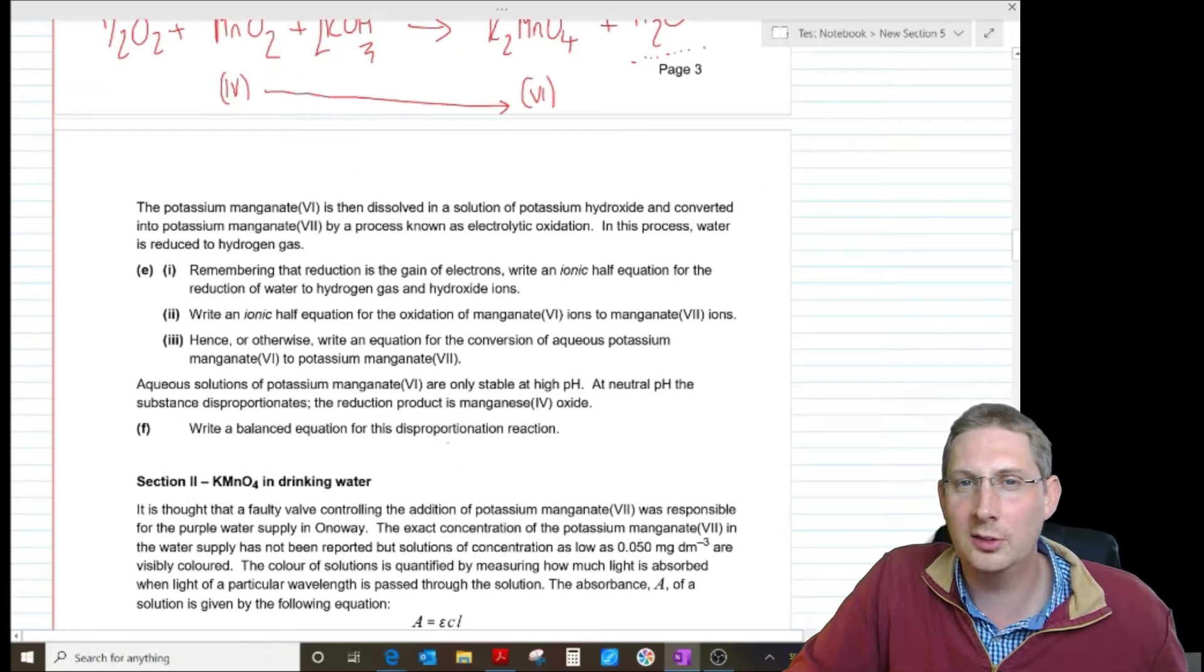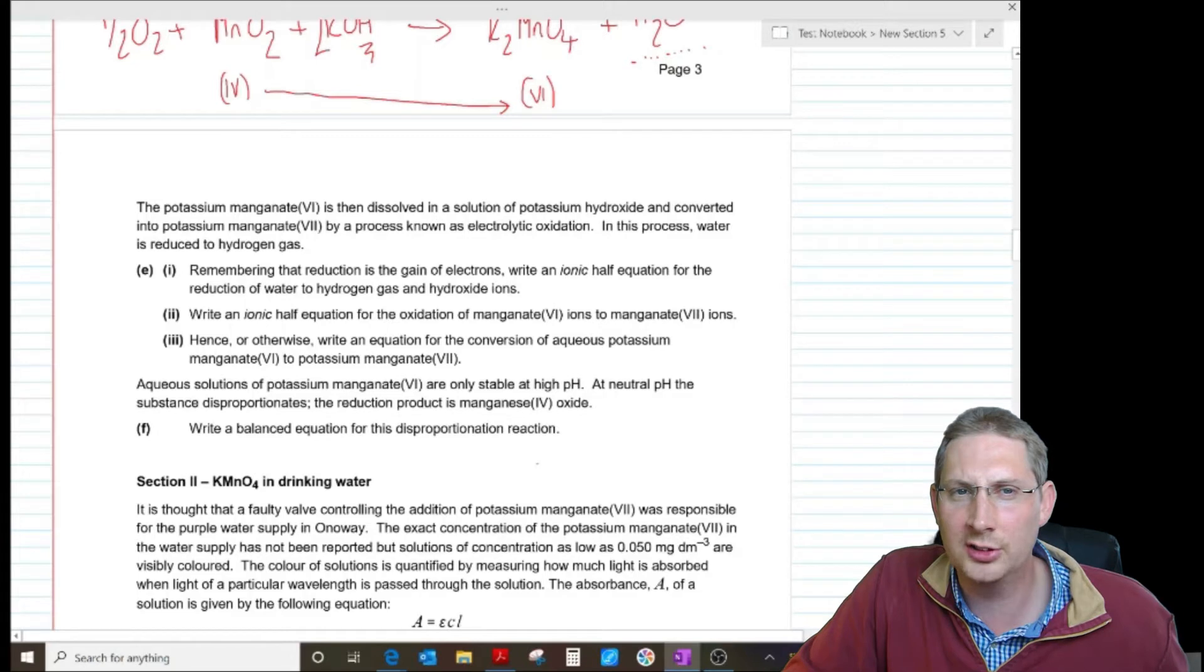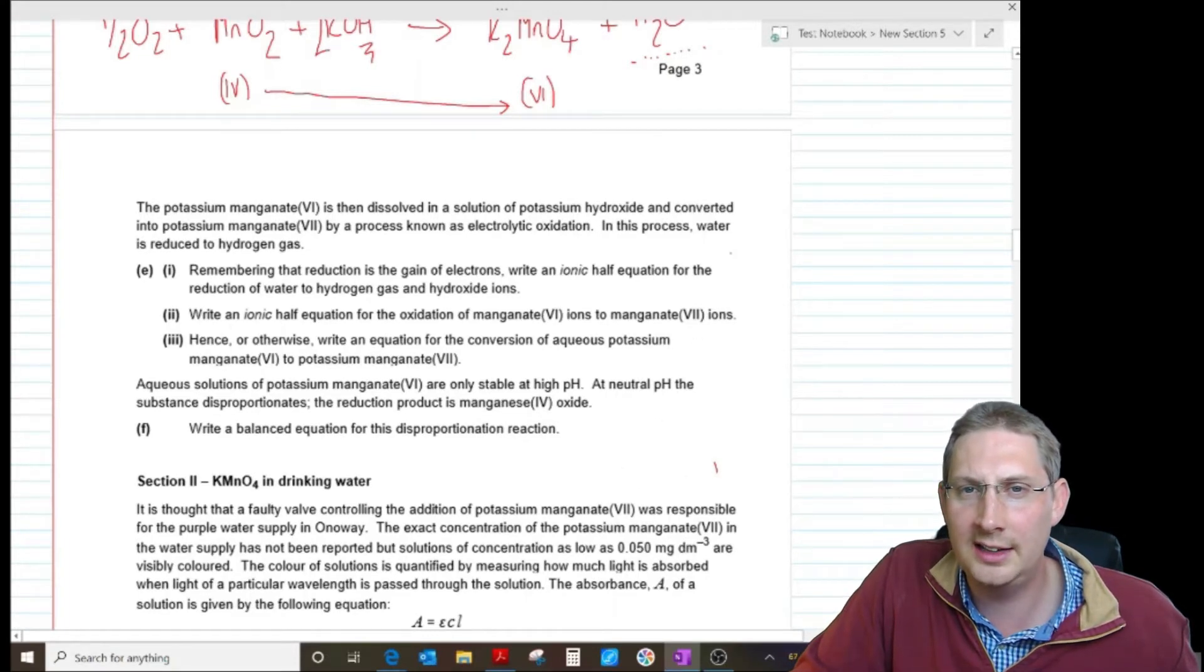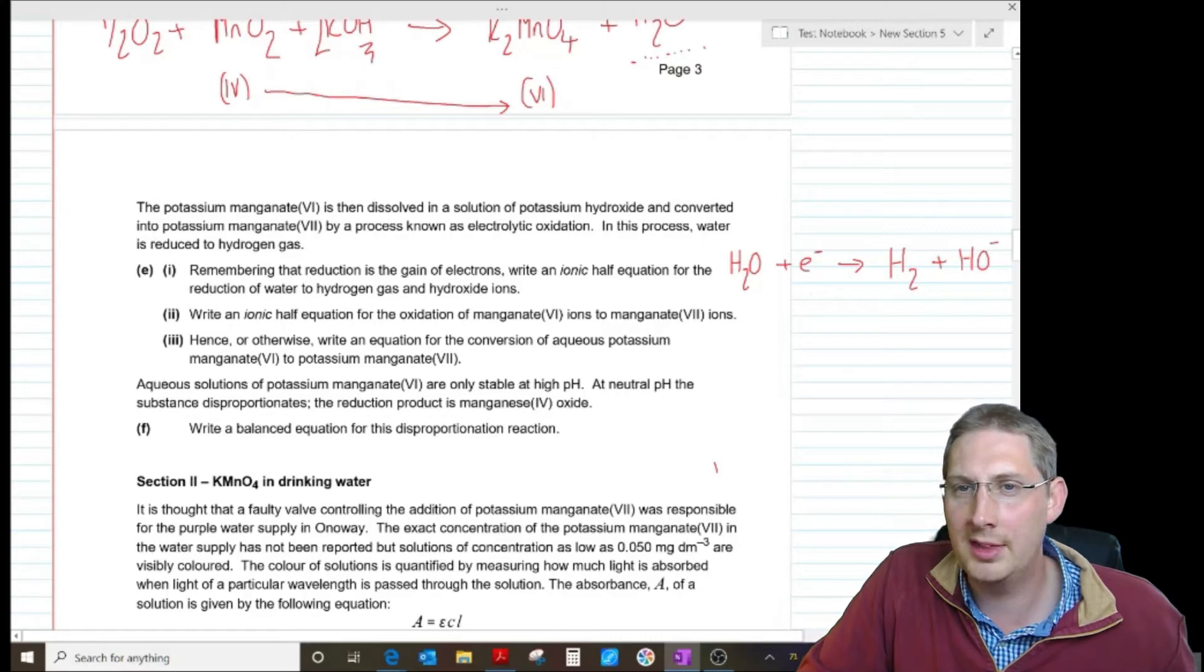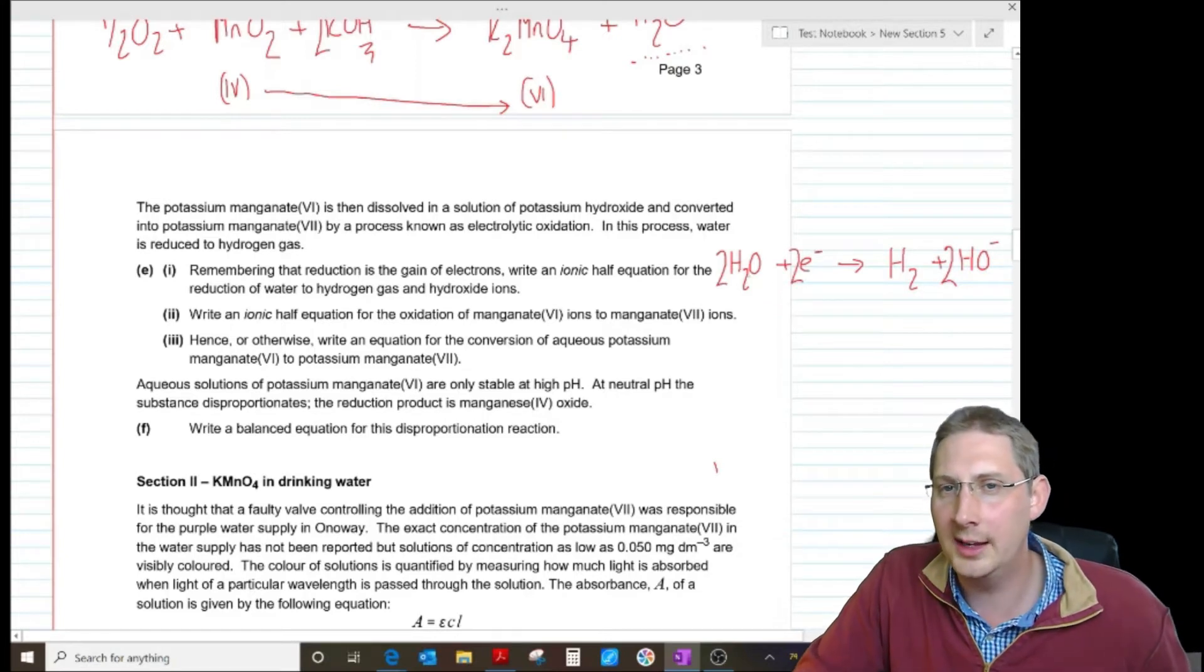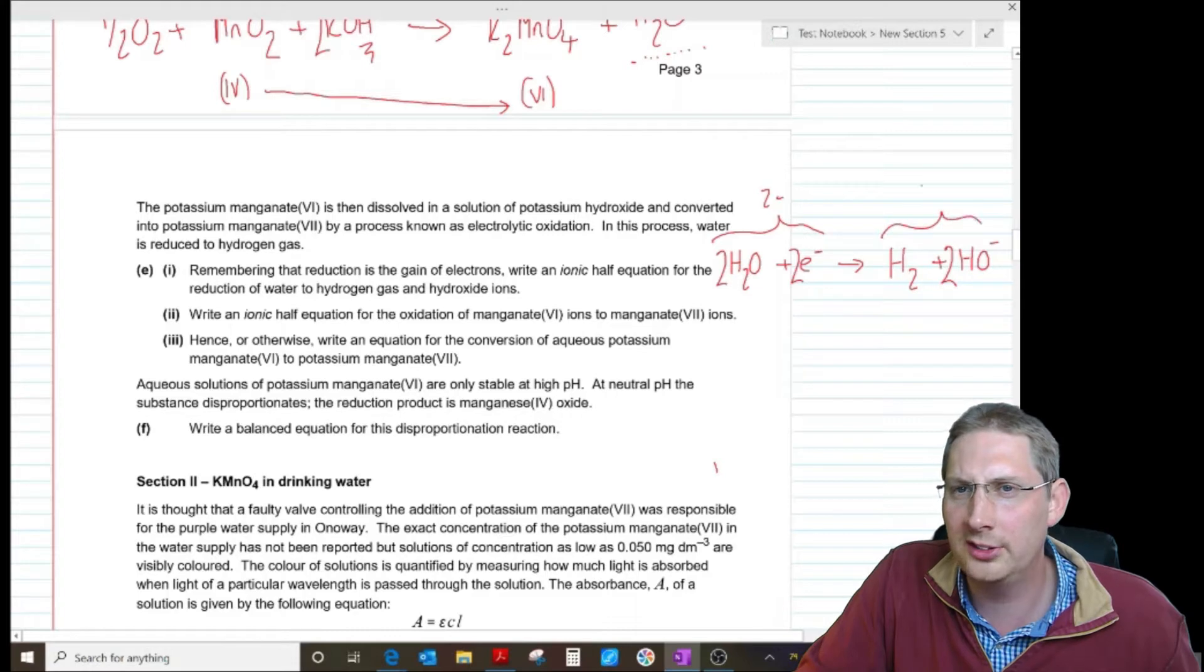Potassium manganate six is then dissolved in a solution of potassium hydroxide and converted into potassium manganate seven by a process known as electrolytic oxidation. In this process, water is reduced to hydrogen gas. Remembering that reduction is the gain of electrons, write an ionic half equation for the reduction of water to hydrogen gas and hydroxide ions. Okay, so it's a gain of electrons. Reduction of water, including electrons, going to hydrogen gas and hydroxide ions. So we've got two there and three there. If we had two waters, we could make two HO minus and we'd need two electrons then. That works - four hydrogens, four hydrogens, two oxygens, two oxygens, charge of minus two on the left and charge of minus two on the right.